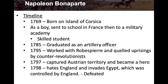In 1785, he graduated as an artillery officer. In 1795, he worked with Robespierre and quelled uprisings by the counter-revolutionists. In 1797, he captured Austrian territory and became a national hero because he took Austrian territory and gave it to France. In 1798, he decided to invade Egypt, which was controlled by England — England had a lot of influence on Egypt, Palestine, and the Middle East during this time and for many years to come.